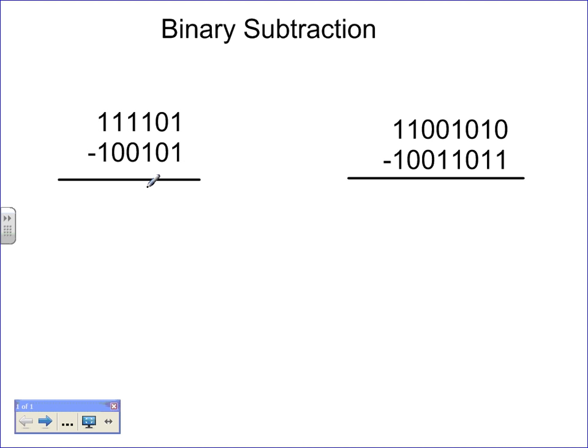So I have 1 in the first ones column, I have 1 minus 1, and that's going to be 0. 0 minus 0 is 0. 1 minus 1 will be 0. 1 minus 0 is 1. 1 minus 0 is 1. And 1 minus 1 is 0. And we don't have to put that first 0 because it's a leading 0. And there's our answer, that one's pretty simple.